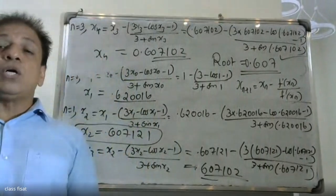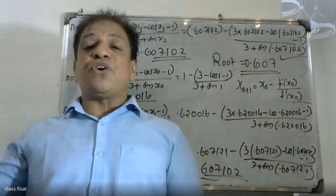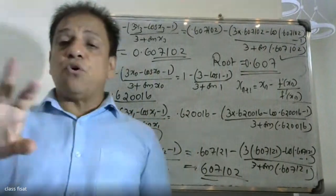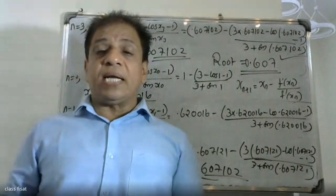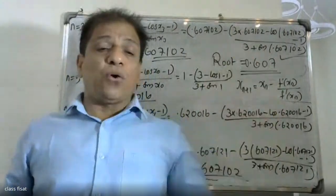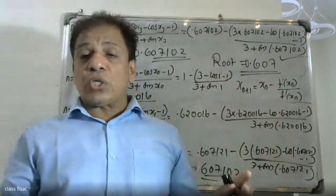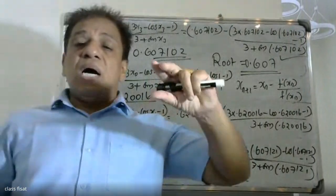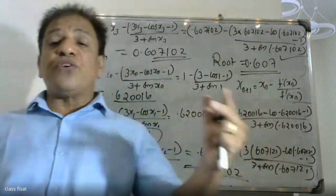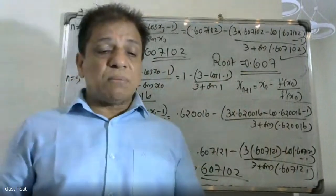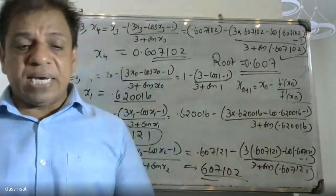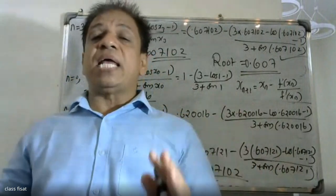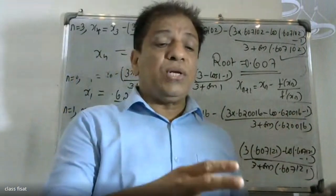Applying the formula x_{n+1} equals x_n minus f of x_n by f dash x_n, where f dash x_n is not equal to 0 and n equals 0, 1, 2, 3. The iteration formula simplifies to x_{n+1} equals x_n minus (3x_n minus cos x_n minus 1) divided by (3 plus sin x_n), and the root lies between 0 and 1.